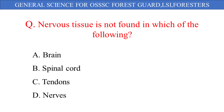Nervous tissue is not found in which of the following? The given options are: A. Brain, B. Spinal cord, C. Tendons, D. Nerves. And the correct answer is option C: Tendons.